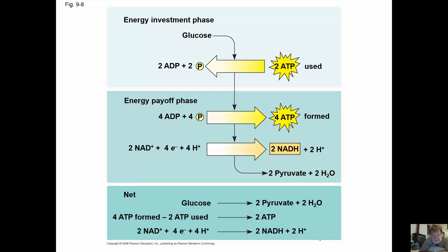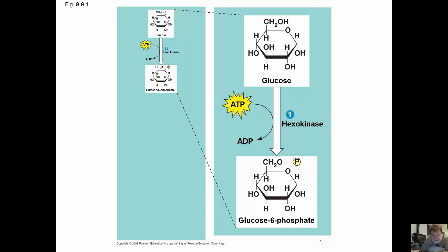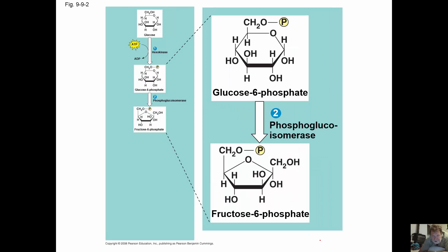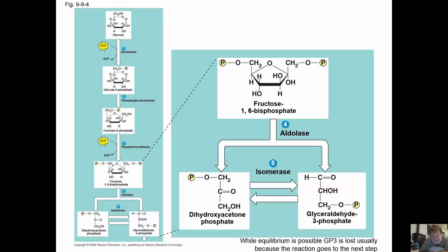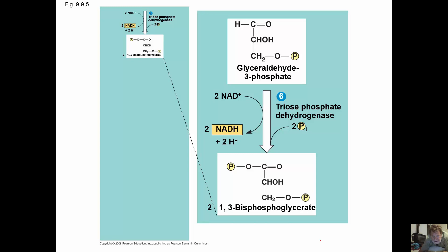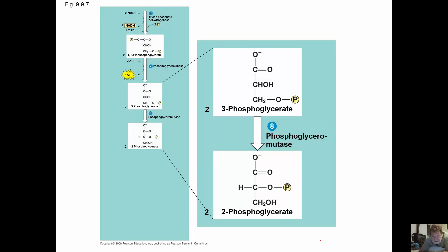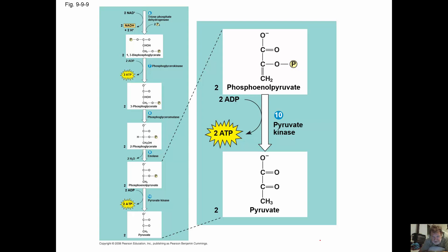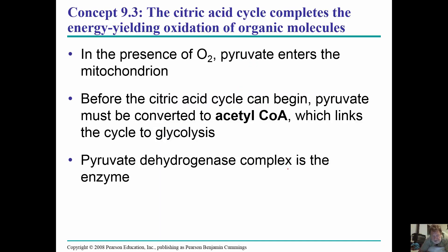You need to know this figure. Going from glucose to pyruvate: you should know what the glucose molecule looks like, and what pyruvate looks like — here are the 3 carbons in pyruvate. We've removed the vast majority of hydrogens and harvested those with NAD+.